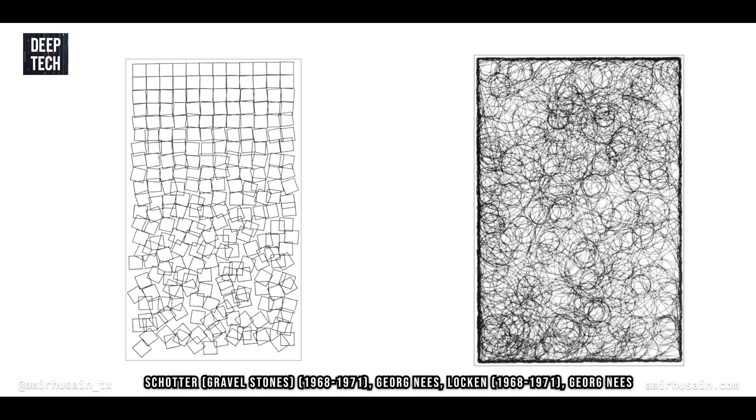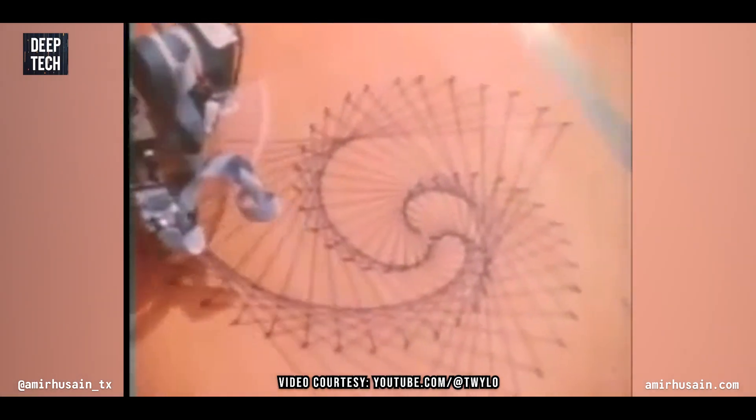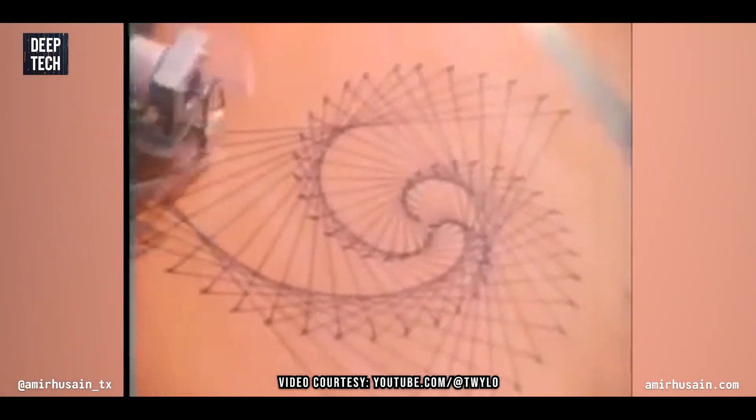Starting in the 60s and 70s, there was a movement by a small number of programmers and artists to use computers to create patterns, geometric shapes, and things we would call art — not just in terms of images, but also in terms of sound, the entire multimedia experience, using computers to create that.